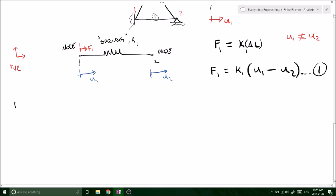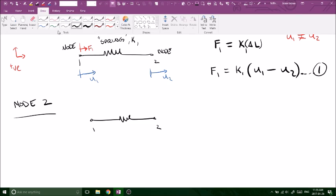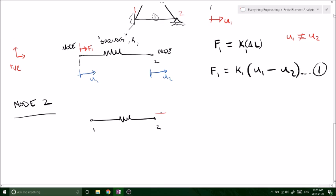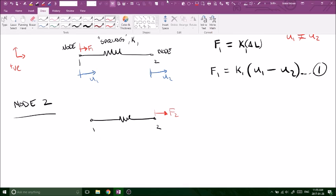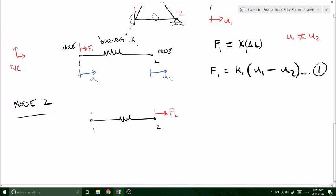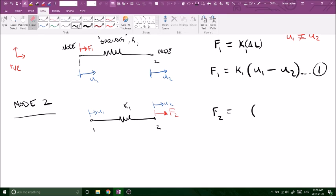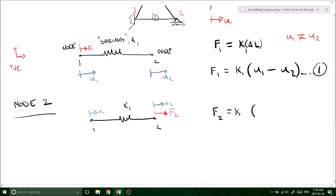Now if we consider node 2. And say we have an applied force on node 2. Same as node 1, I could have a potential for a U1 and a potential for a displacement U2. Using the same argument that we used on node 1, we can say that F2 is equal to K1 times U2 minus U1.